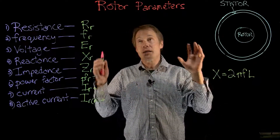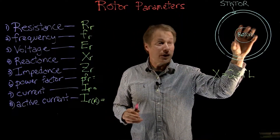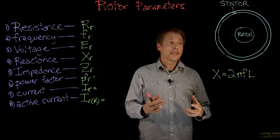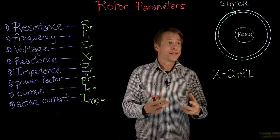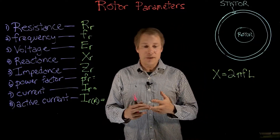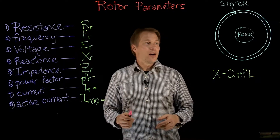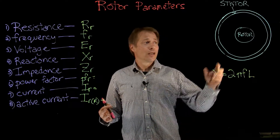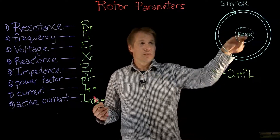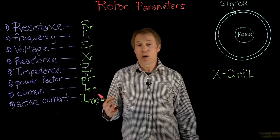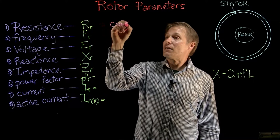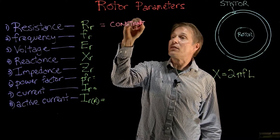Let's focus on rotor parameters, starting with the resistance of the rotor. What creates it? It's basically how the rotor is made — the conductor material. We could have aluminum bars or copper windings, for example. The material is not going to change with the speed of the rotor, so if I spin it faster I still have copper windings. Therefore, rotor resistance remains constant because the material remains constant.